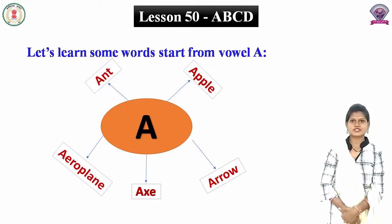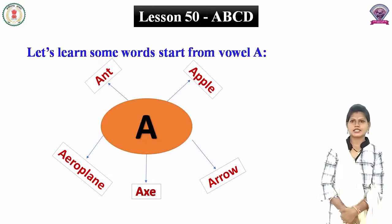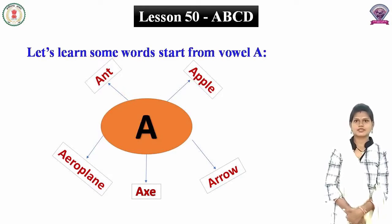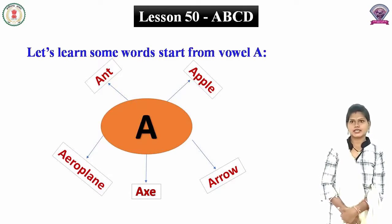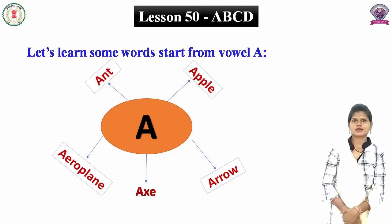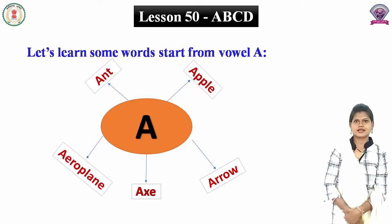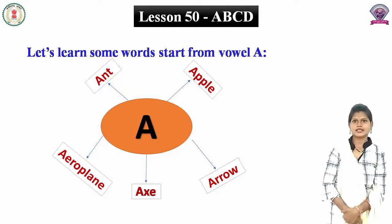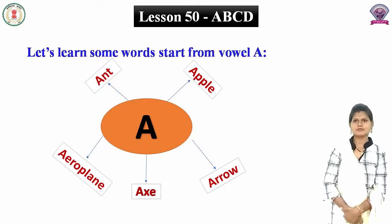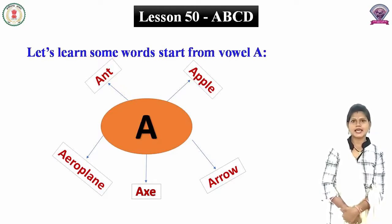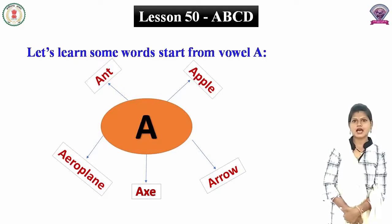Let's learn some words. Start from vowel A. Chaliye kuch shabd dekhte hain jo vowel A se shuru hote hain. A se ant. Ant means cheenti. A se apple. Apple matlab seb. A se arrow. Arrow matlab teer. A se axe. Axe means kulhaari. A se aeroplane. Aeroplane means hawai jahaj.